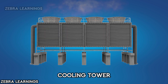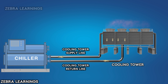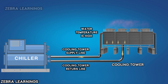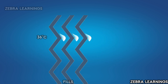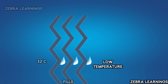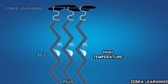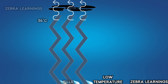In HVAC, wet bulb temperature is used in cooling towers because of the evaporation process that takes place there. The hot water from the supply line of the chiller's condenser enters the cooling tower, flows down through the fills, and then returns to the chiller through the return line. As the water travels down through the fills, some of it evaporates. During evaporation, the water absorbs some heat and evaporates, causing the remaining water temperature to decrease. The evaporated water vapor is expelled by a fan, and the remaining water, now at a lower temperature, returns to the chiller.